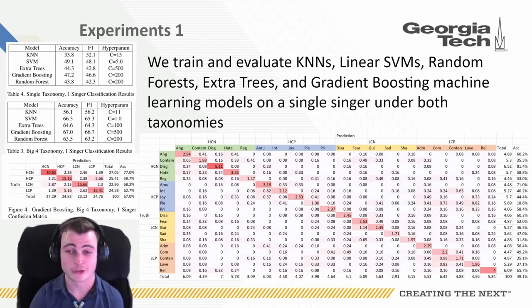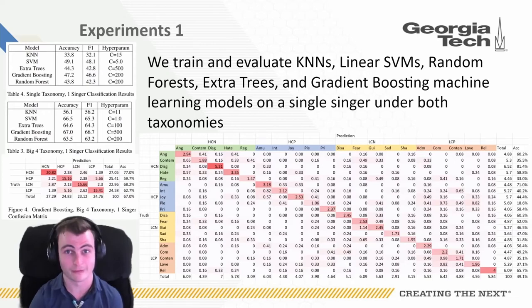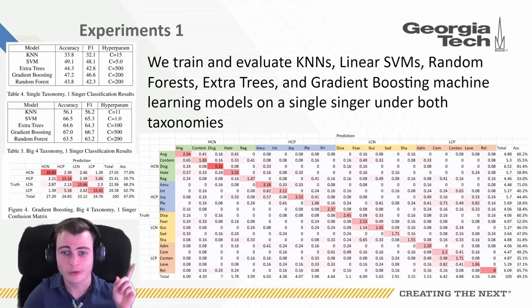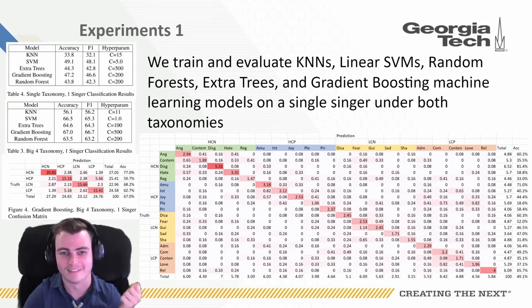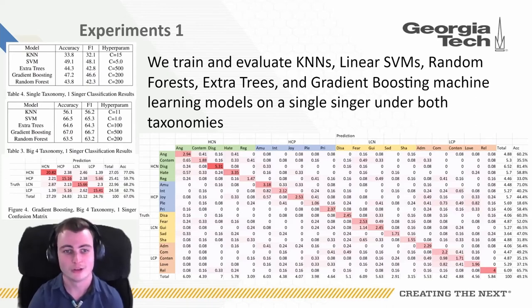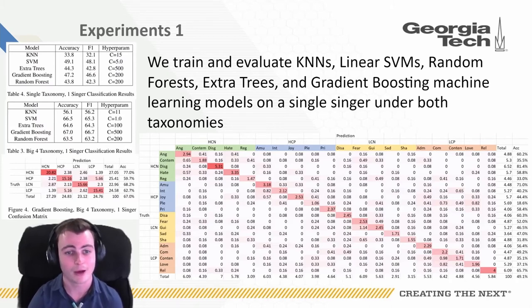In experiment 1, we trained and evaluated KNNs, linear SVMs, random forests, extra trees, and gradient-boosting machine learning models, and restricted these models to only a single singer's feature vectors. You can see our confusion matrix for our 20-bucket taxonomy — along the diagonal you'll find the correct predictions. The single taxonomy achieves an accuracy of 49% with the SVM, which is 10 times better than random guessing at 5%, and the big four taxonomy achieves accuracies as high as 67% when determining between the four quadrants of valence and control.